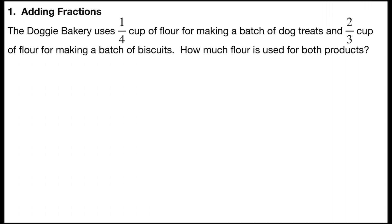Problem number one is adding fractions. It says the Doggy Bakery uses one-fourth cup of flour for making a batch of dog treats and two-thirds cup of flour for making a batch of biscuits. How much flour is used for both products? So we're going to add together one-fourth plus two-thirds. Since the denominators are not alike, we're going to need to find a common denominator.